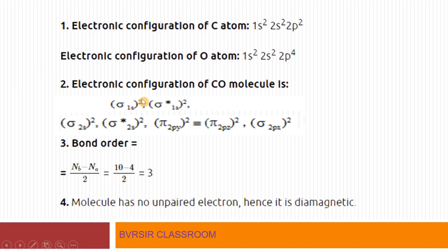The molecular orbital electronic configuration is: σ1s², σ*1s², σ2s², σ*2s², π2py², π2pz², σ2px². The bond order calculates to 3, confirming a carbon-oxygen triple bond. There are no unpaired electrons, hence carbon monoxide is diamagnetic.